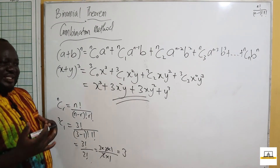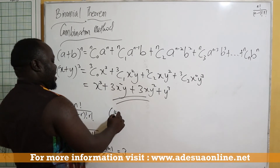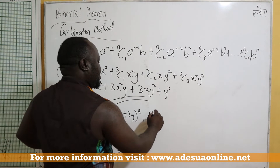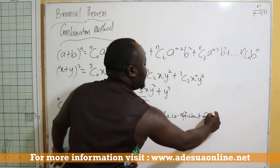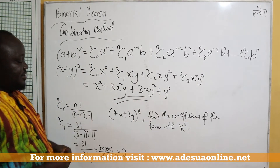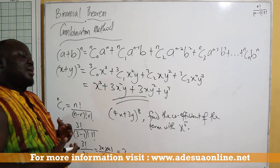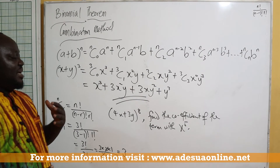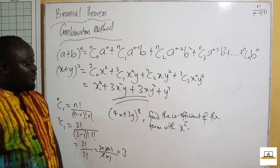Now, assuming we have a large expansion — let's say we have (4x + 3y) raised to the power 8 — and we've been asked to find the coefficient of the term with x raised to the power 5. So we want to find what the x⁵ term contributes. For example, if it contains 20x⁵y³, then the coefficient would be 20y³.